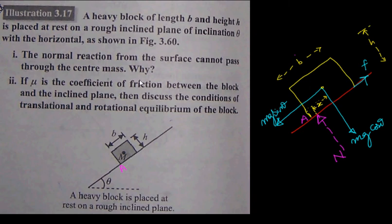In this problem, we will discuss the equilibrium position of a heavy block placed on a rough inclined plane. The block M is the heavy block placed on the rough inclined plane, and now we'll discuss about its equilibrium state.